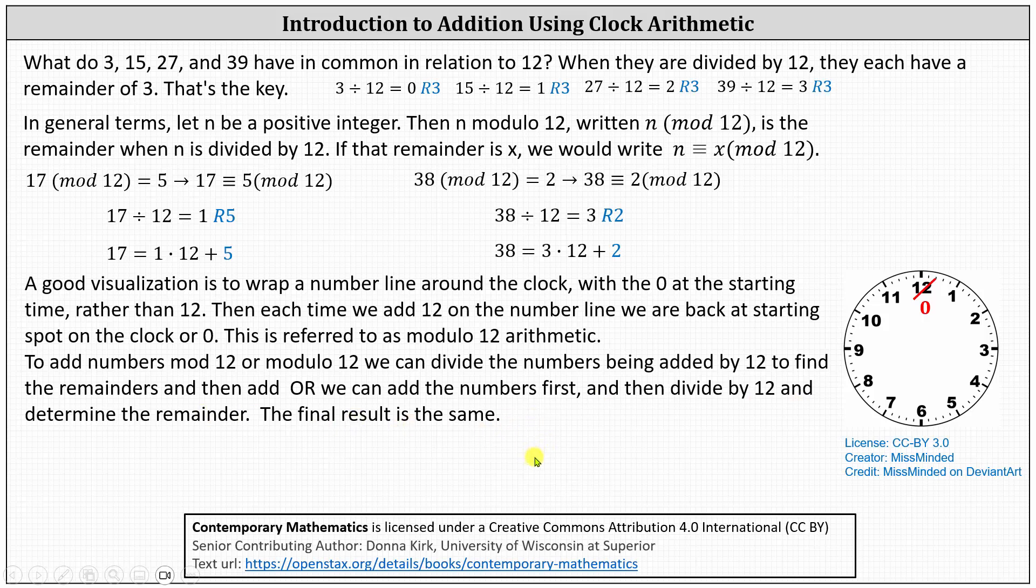We'll take a look at both methods. As an example, let's consider 2 plus 32 mod 12. The mod 12 here applies to both the 2 and the 32. So one method is to go ahead and just find the sum of 2 and 32, which gives us 34 mod 12. To evaluate 34 mod 12, we divide 34 by 12. Notice the remainder is 10, indicating 34 mod 12 equals 10.